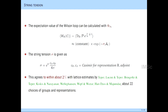We can calculate the expectation value of the Wilson loop, expressed in terms of the current J — this is the Wilson line. We calculate the expectation value and immediately get an area law, and we can read off the string tension sigma. The string tension is given by a simple expression in terms of Casimirs: R is the representation of the Wilson line, C_A is the adjoint Casimir, C_R is the Casimir for representation R, and E is the coupling constant.